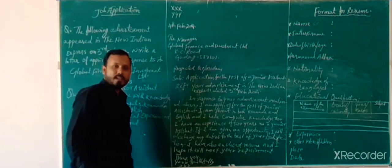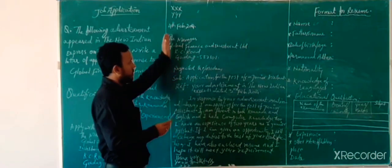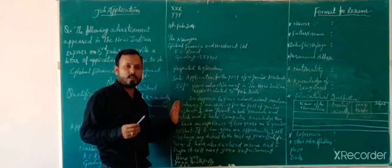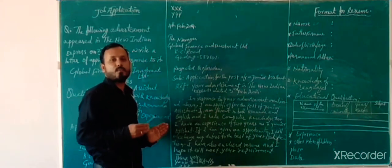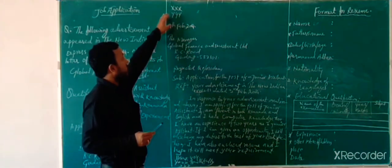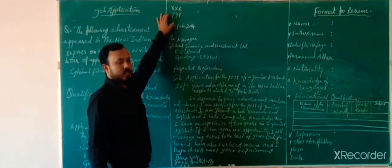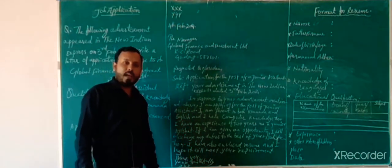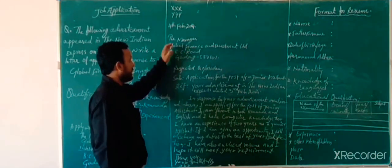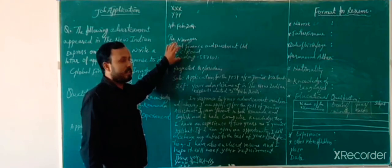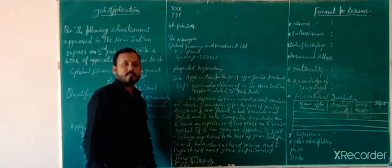Now you have to write the letter. Everything should be written on the left-hand side only — this is the American style of letter writing, and nowadays it is prescribed and you have to follow this system. Earlier you used to write 'From,' then date, then 'To,' but now that is not needed. Simply write your name and address in place of 'From,' then the date, then the name and address of the receiver.